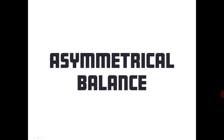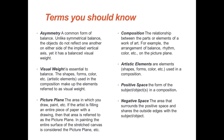Today I'm going to talk about asymmetrical balance — asymmetry, a common form of balance. Unlike symmetrical balance, the objects do not reflect one another on either side of the implied vertical axis, yet it has balanced visual weight.